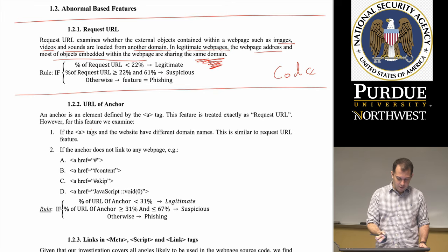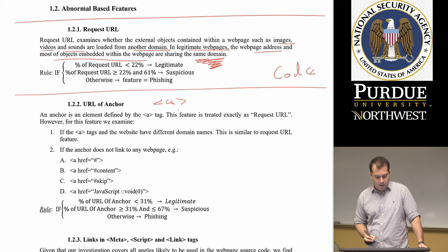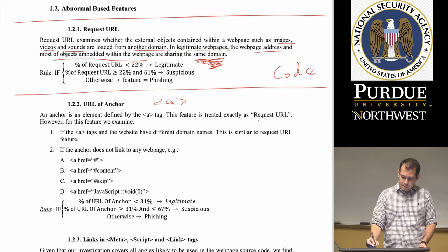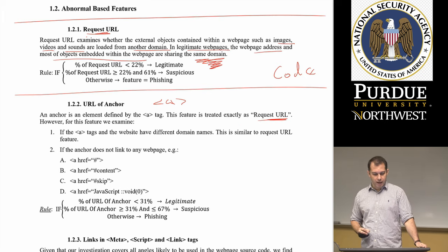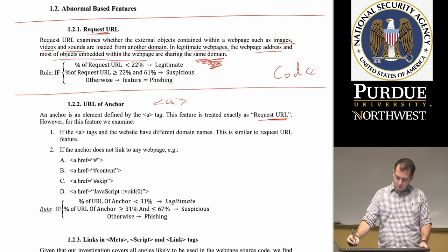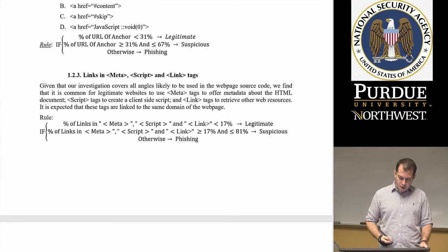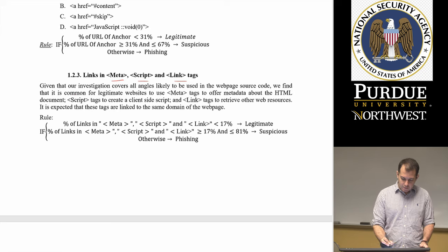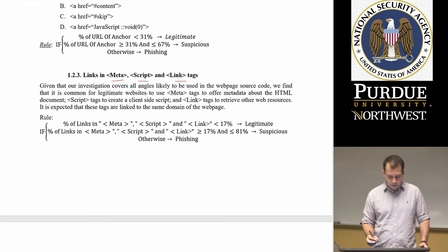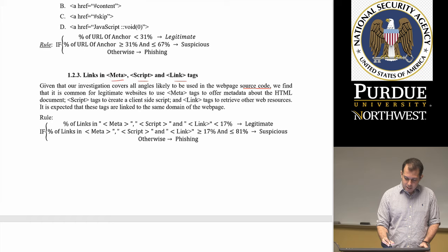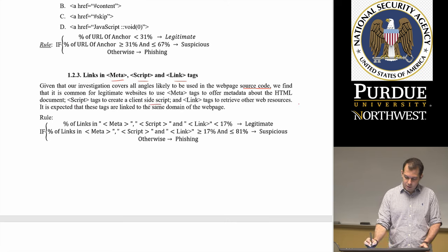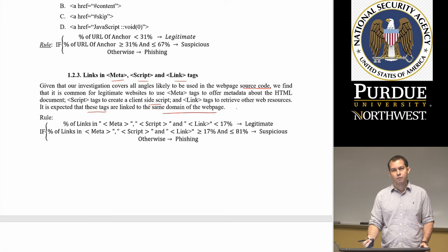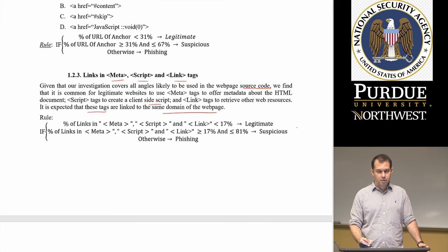The anchor tag feature is treated similarly to the request URL — they look at specific anchor tags in the code and apply the same percentage-based logic. They also examine links in meta tags, script tags, and link tags. Based on their investigation, it's common for legitimate websites to use meta tags for metadata, script tags for client scripts, and link tags to retrieve web sources — and these are expected to link to the same domain. Many of these features are very similar, just looking at different tags in the website.